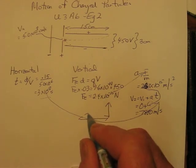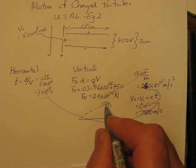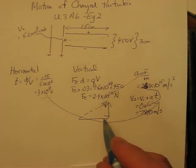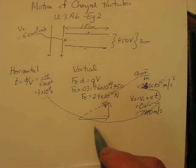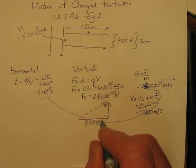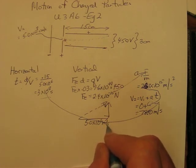The velocity right there is made up of two components. The initial component is the 5.0 times 10 to the 6 meters a second. That's the horizontal velocity. It was constant.